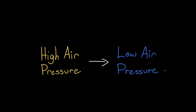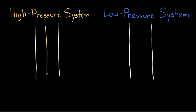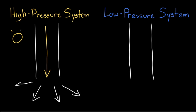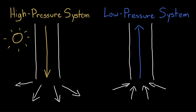Weather results from these air masses moving from areas with high air pressure to areas with low air pressure. When this happens, a high or low pressure system can form. A high pressure system has higher pressure at its center than the areas around it, so air moves out from the center — high pressure systems typically bring clear skies. A low pressure system has lower pressure at its center, so air is sucked into the center, and low pressure systems typically bring more intense weather.